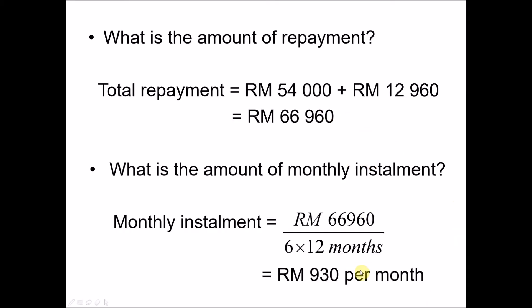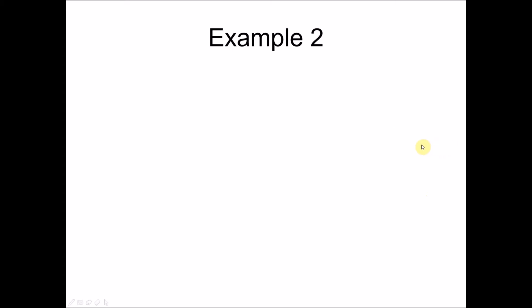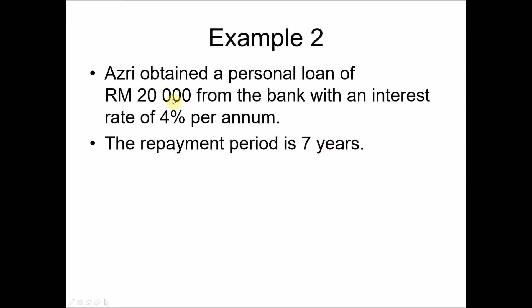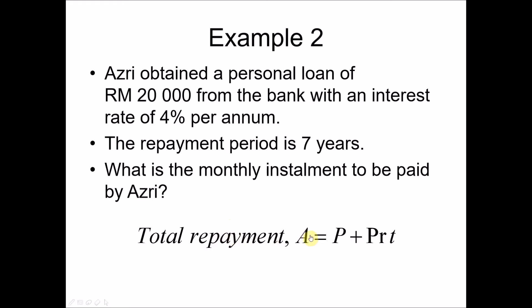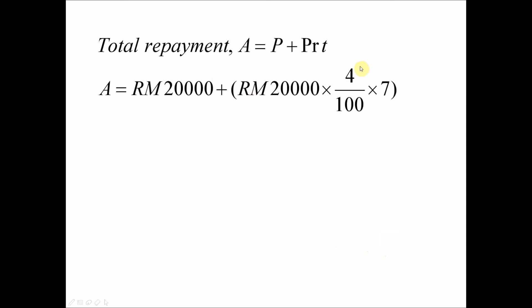Now let's look at Example 2. ASRI obtained a personal loan of twenty thousand ringgit. The bank charges four percent per annum interest and the repayment period is seven years. We can solve this the same way as Example 1, but we can also use the formula: Total Repayment A = P + PRT, where P is the principal loan amount, R is the interest rate, and T is the time.